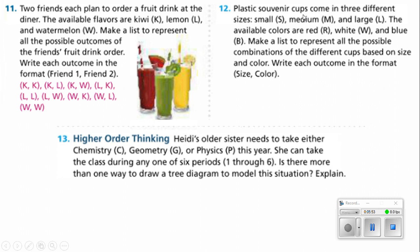Number 12 says plastic souvenir cups come in three different sizes: small, medium, and large, which we will label S, M, and L. The available colors are red, white, and blue. Make a list to represent all the possible combinations.